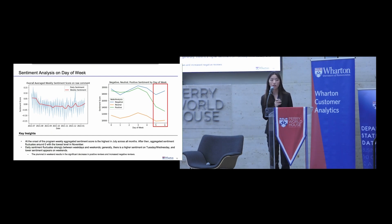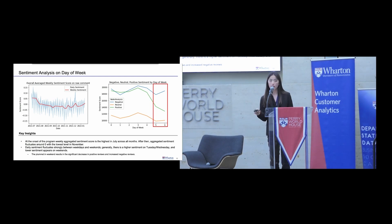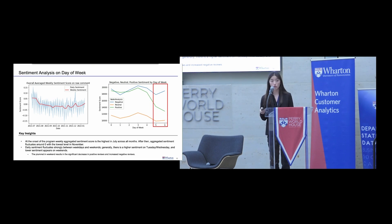For sentiment analysis results: the graphic on the left shows that sentiment is most positive in July and hovers around zero for other months in the study. On the right, on a week-by-week basis looking at every weekday, we find that sentiment tends to be most negative on weekends and most positive on Tuesdays and Wednesdays.